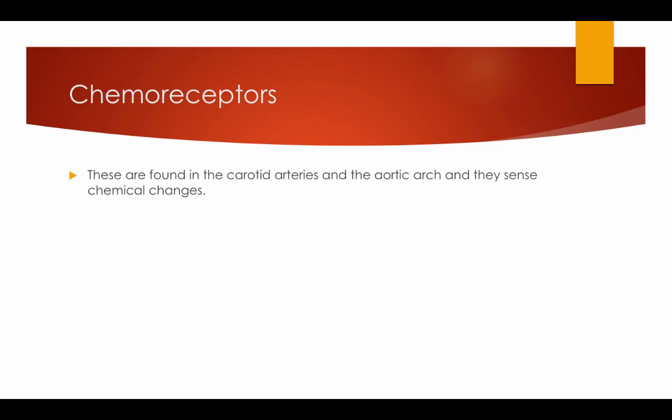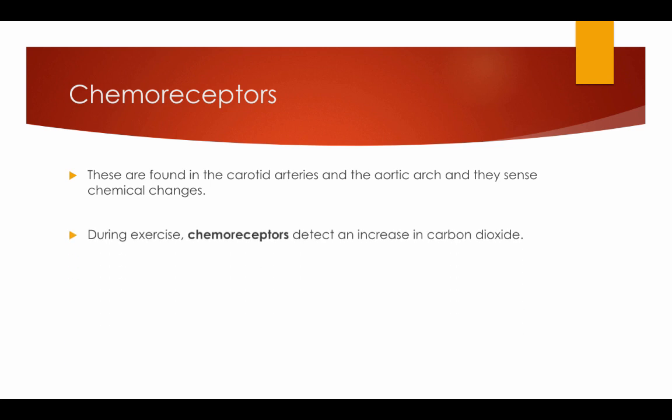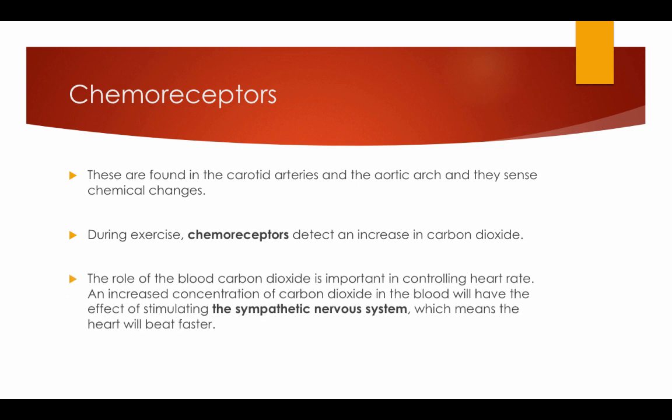Chemoreceptors are found in the carotid arteries and the aortic arch, and they sense chemical changes. During exercise, chemoreceptors detect an increase in carbon dioxide. The role of blood carbon dioxide is important in controlling heart rate — an increased concentration of carbon dioxide in the blood will stimulate the sympathetic nervous system, which means the heart will beat faster.